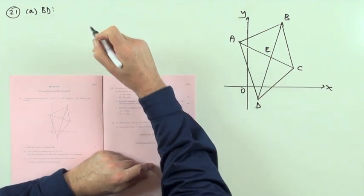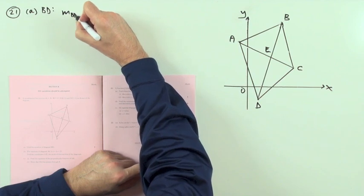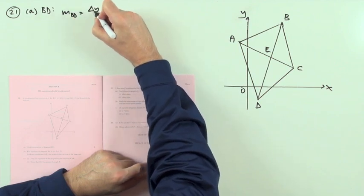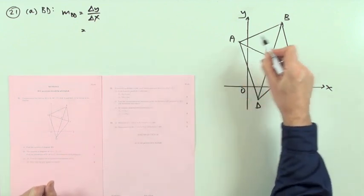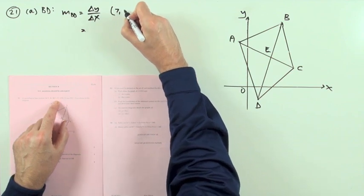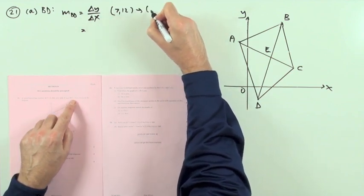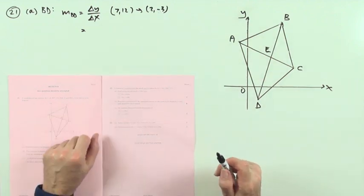Well that means I'll need to know a point on it, or two to choose from, and its gradient. So what's the gradient of BD? Well that'll be the difference in the y coordinates over the difference in the x coordinates. Maybe I should be careful this time to say, well what is it? It's going from B to D. B was (7, 12) and D was (2, -3) just to be sure I don't mix them up with any of the other numbers.